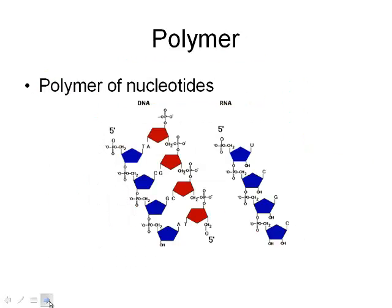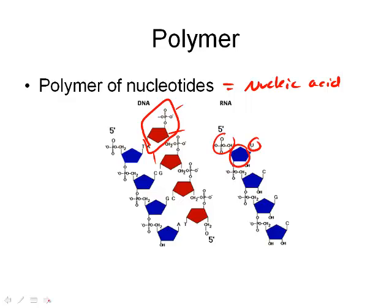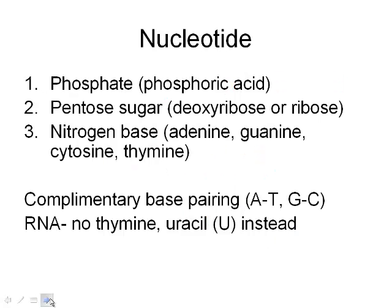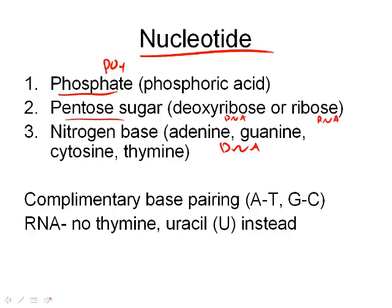Both DNA and RNA are polymers of nucleotides. A nucleotide is made up of a phosphate group (PO4), a pentose sugar, and a nitrogen base. For DNA, the sugar is deoxyribose; for RNA, it's ribose. The nitrogen bases in DNA are adenine, guanine, cytosine, and thymine, which form complementary pairs: A with T and G with C. In RNA, thymine is replaced by uracil, so A pairs with U and G still pairs with C.